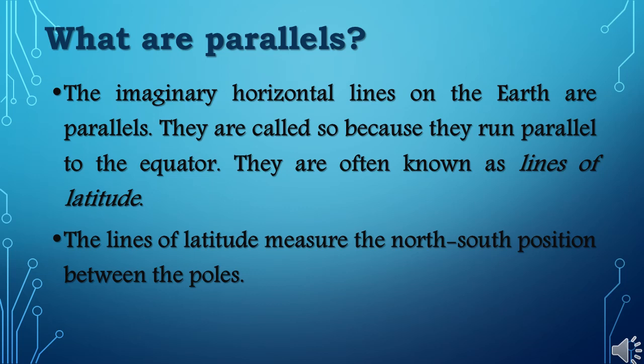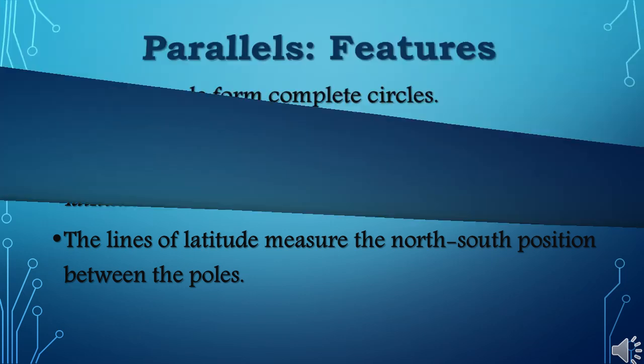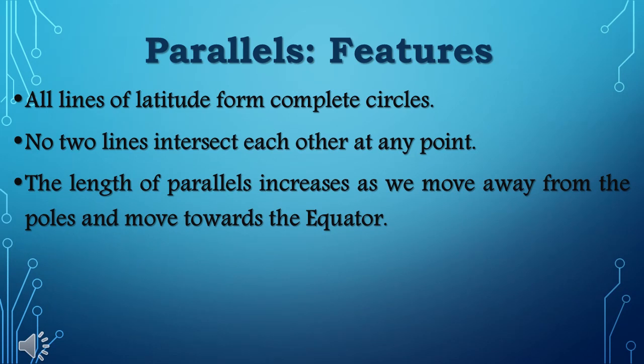The lines of latitude measure the north-south position between the poles. Parallels features: All lines of latitude form complete circles. No two lines intersect each other at any point. The length of parallels increases as we move away from the poles and move towards the equator.